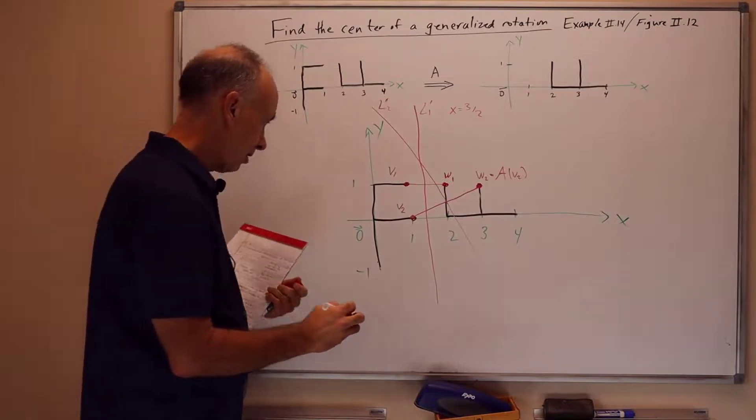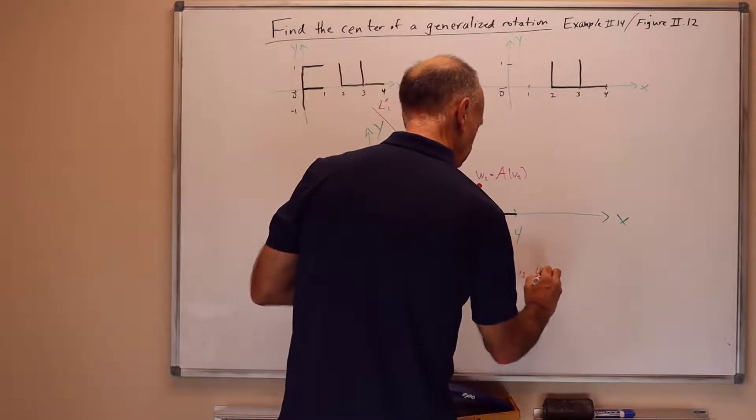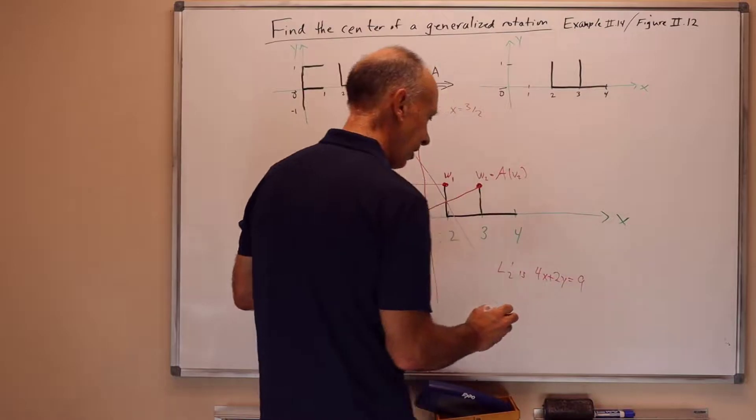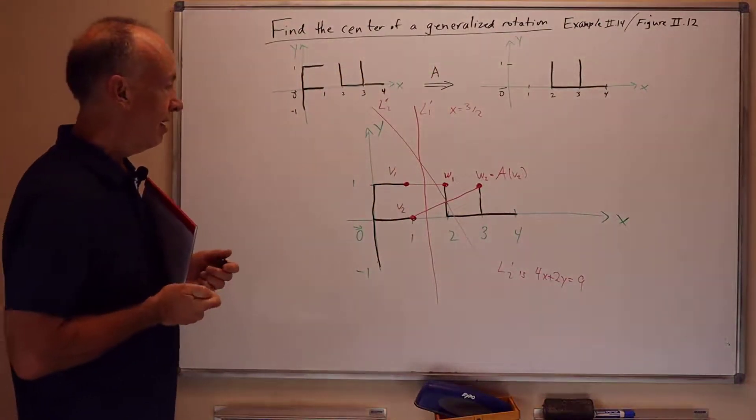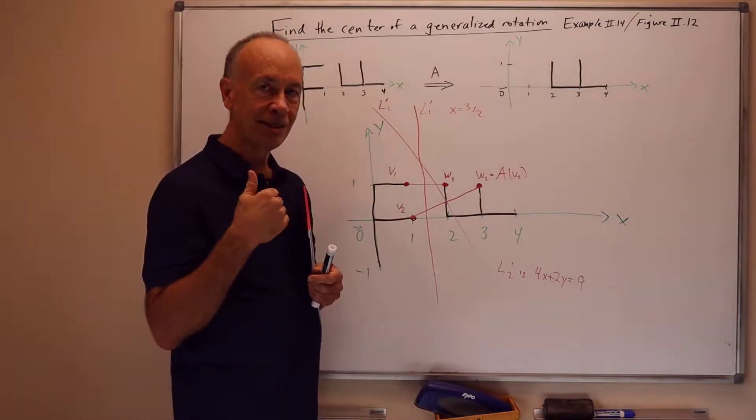Okay. And this is the line. l2 prime is where 4x plus 2y equals 9. I'll let you do that computation on your own if you wish. And the two lines, I chose the two lines to not be the same.